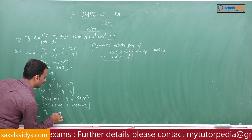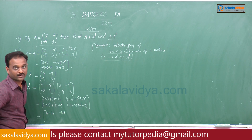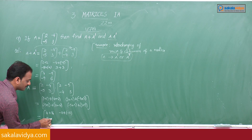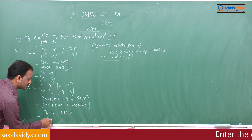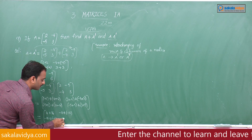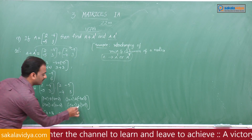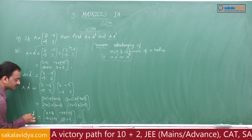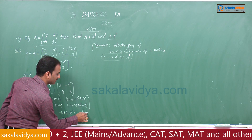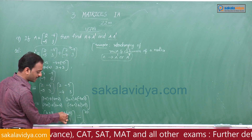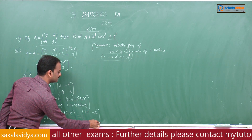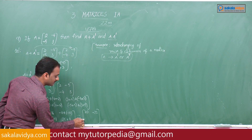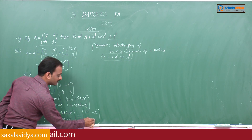Second row, first column: (-5)×2 + 3×(-4) = -10 + (-12) = -22. Second row, second column: (-5)×(-5) + 3×3 = 25 + 9 = 34.